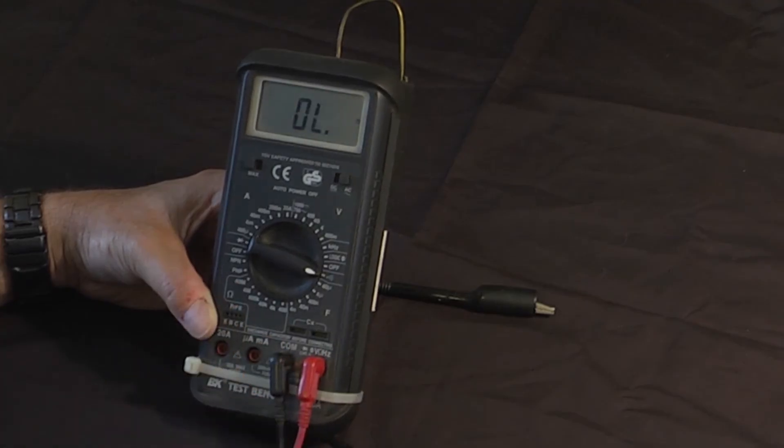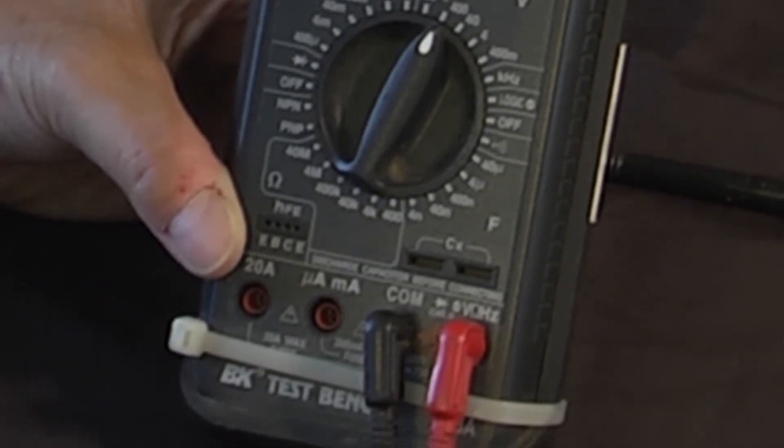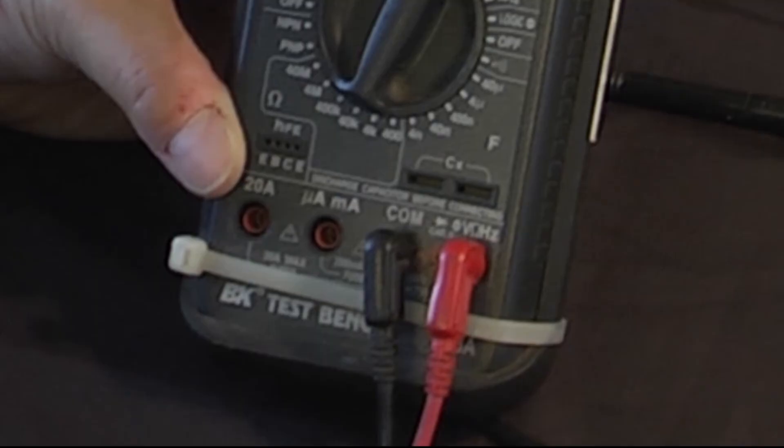Take a voltmeter and set it to the continuity setting. Be sure the test leads are connected to the correct jacks on the meter.